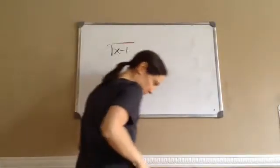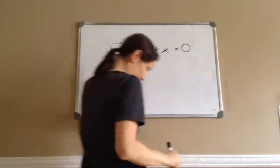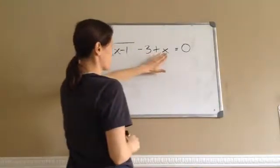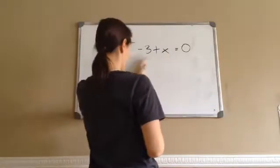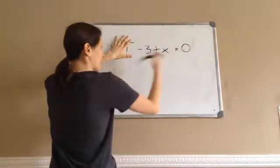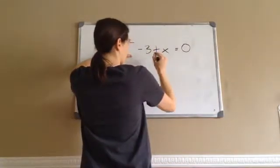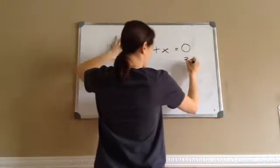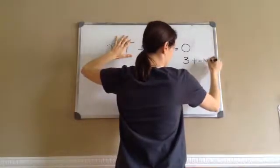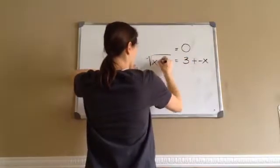Problems 108.4 and 108.5 do something differently, so pay attention. We have square root of (x − 1) minus 3 plus x equals 0. They've added another x. To isolate the radical expression, move both the negative 3 and the positive x to the other side: negative 3 becomes positive 3, and positive x becomes negative x.